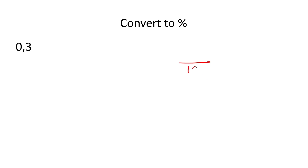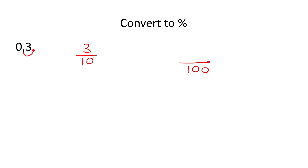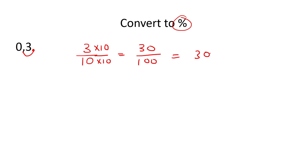To convert this number to a percentage we eventually need it written over 100. The first step is write the number you see — 3 — over. Starting at the back, how many decimal places to get to here? That's only one, so put one zero and then a one, giving 3 over 10. To get a percentage we need 100 at the bottom, so we multiply the bottom by 10, and what you do to the bottom you do to the top, giving 30 over 100, which is 30 percent.